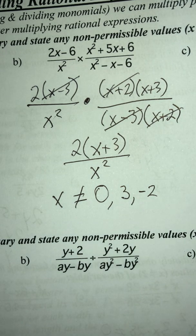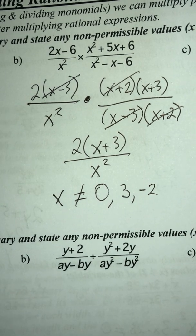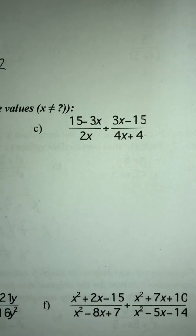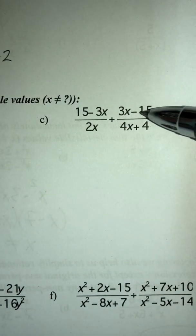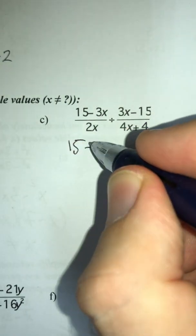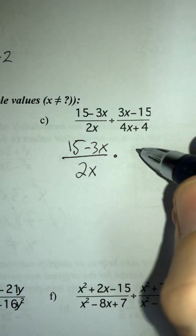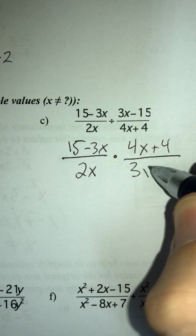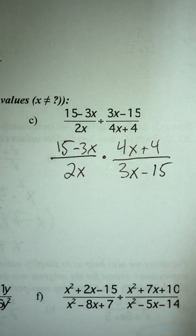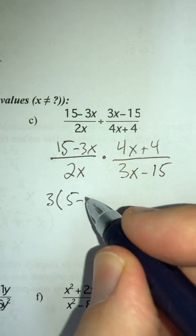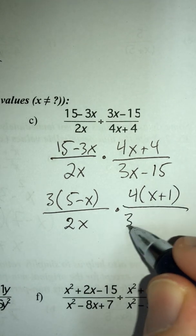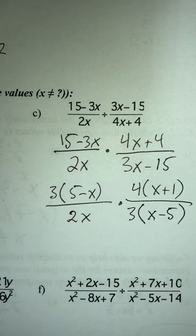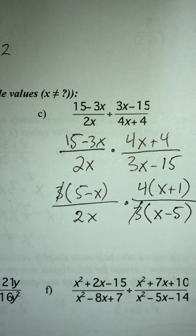For dividing rational expressions there's just one extra step at the beginning. Let's do part c. Because I'm dividing by the second fraction, I flip it. So I have (15 − 3x) over 2x times (4x + 4) over (3x − 15). Now factor: I can factor a 3 out of (15 − 3x) getting 3(5 − x), factor a 4 out of (4x + 4) getting 4(x + 1), and factor a 3 out of (3x − 15) getting 3(x − 5).